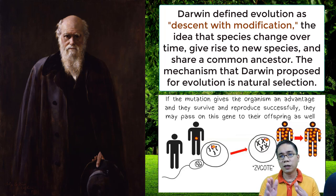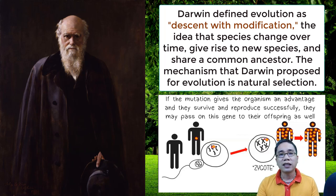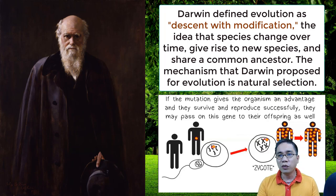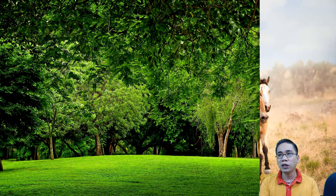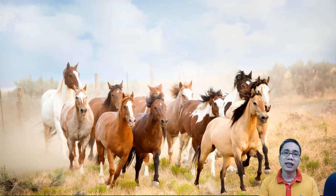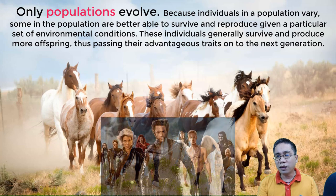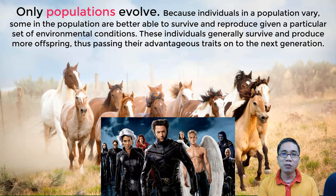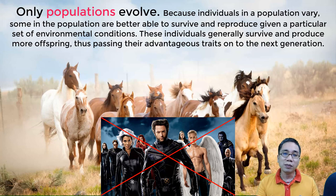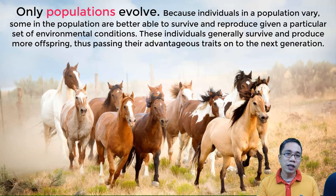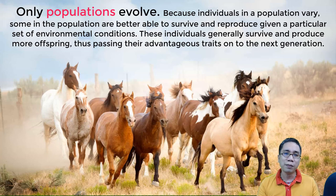So, there is that continuous modification as life moves on in the timeline. But take note that when we talk about evolution, we are not confined to a single organism. Evolution can only be quantified at the population level. So, some random mutant in your X-Men movies — that's not evolution. There must be a population involved. A population must change in a rather similar direction before you can say that evolution happened.